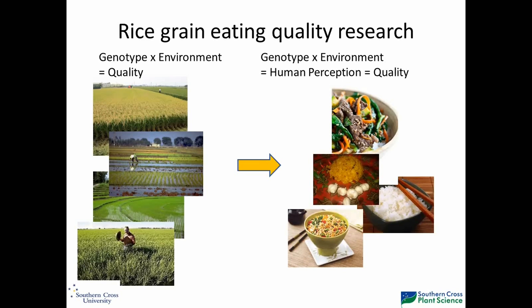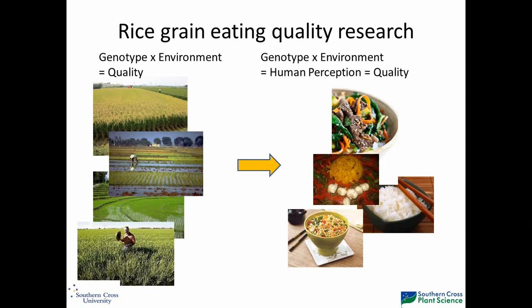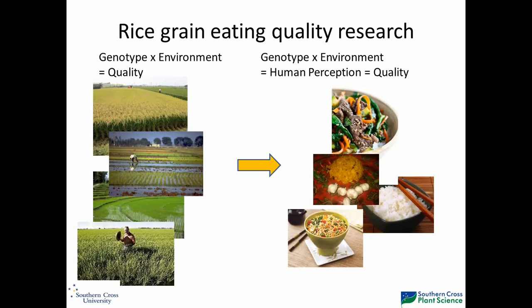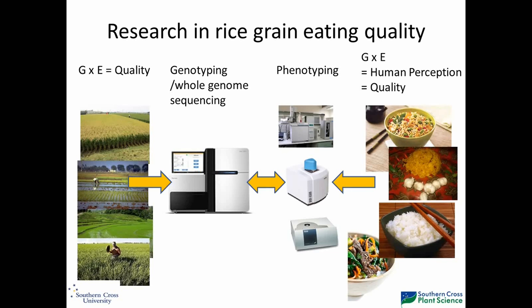I'll throw this slide up as an introduction, the domain in which we've been operating. As you know, genotype by environment interactions result in this very complex thing called quality, while on the other side we have humans — our own genotype and, probably more importantly, our cultural background — that feeds into what the rice consuming community, which is quite large, perceives as quality. It's a reasonably complex environment in which to operate.